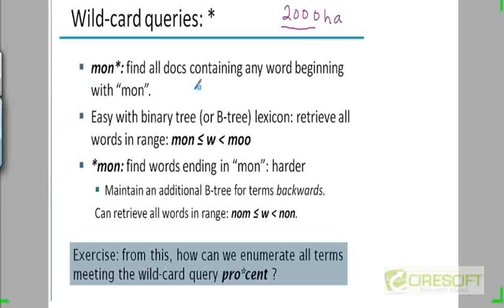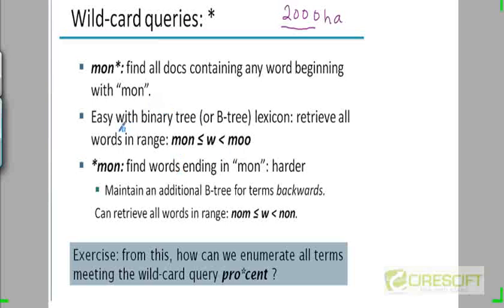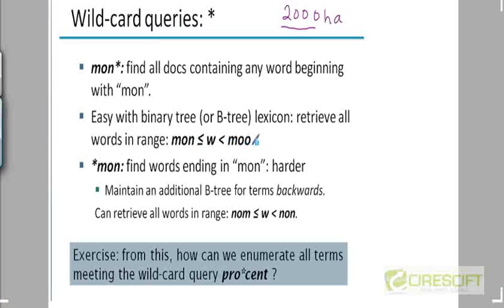Suppose you want all documents containing any word beginning with MON — this could include words like MONDAY or MONOTONOUS. This is easy to do with a B-tree dictionary. All you need to do is retrieve the keys in the range MON to MOO: all terms greater than or equal to MON but less than MOO. These would be the terms that start with MON.